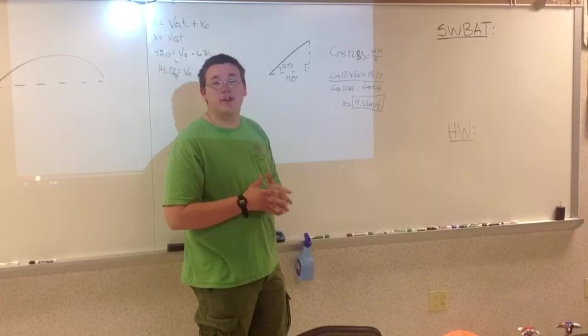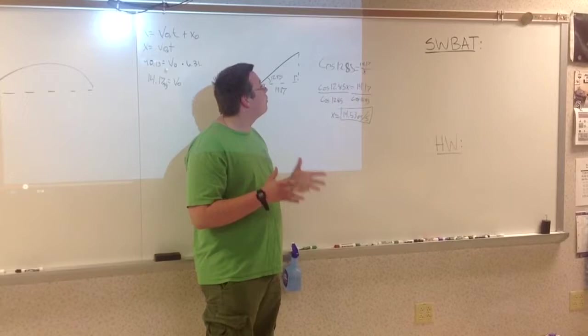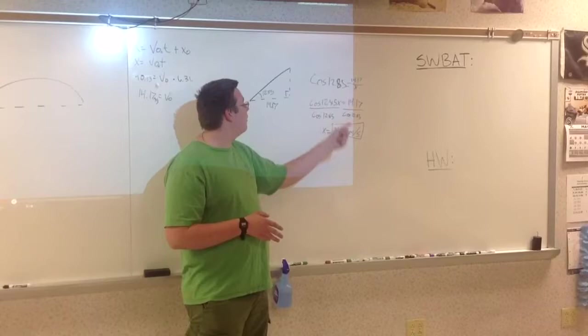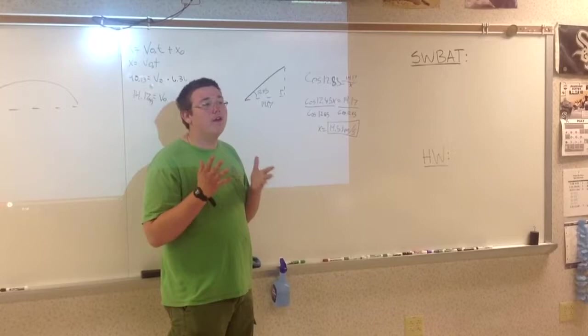Thank you to the PGA for keeping amazing statistics. Cosine 12.85 equals 14.17 over x. In other words, cosine equals adjacent over hypotenuse. And simply by multiplying by x and then dividing by cosine 12.85, we can determine that x, the initial velocity of this ball, is 14.53 meters per second.